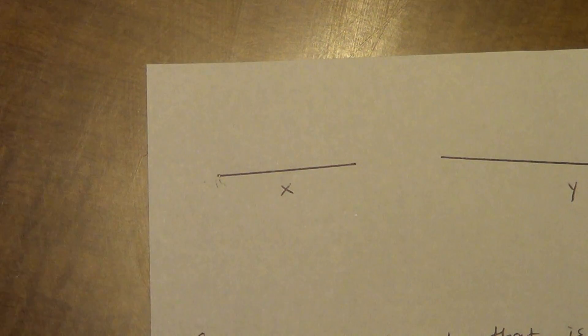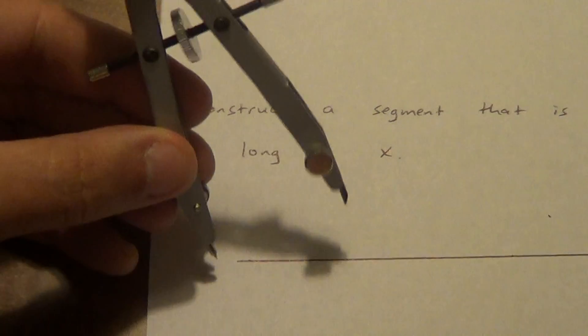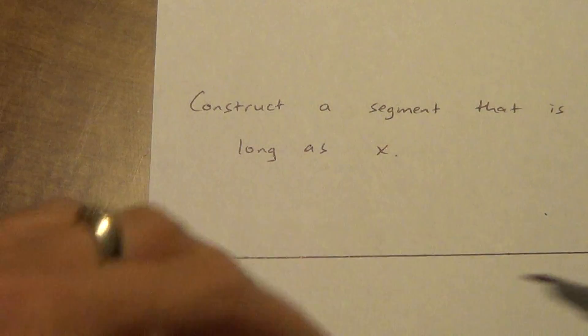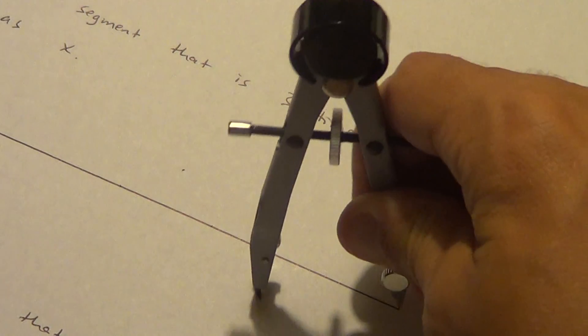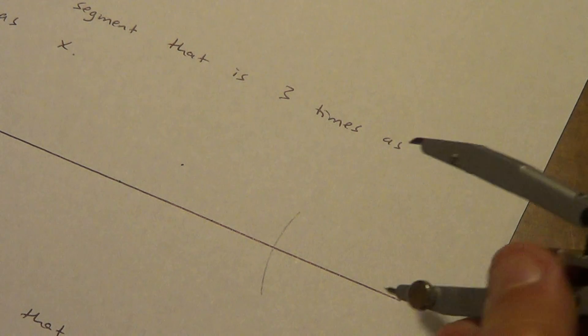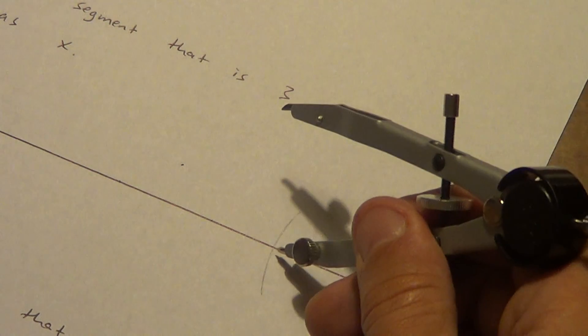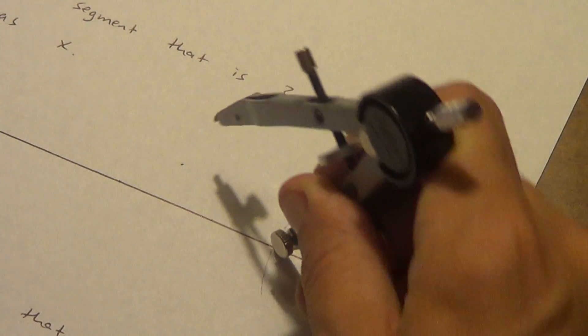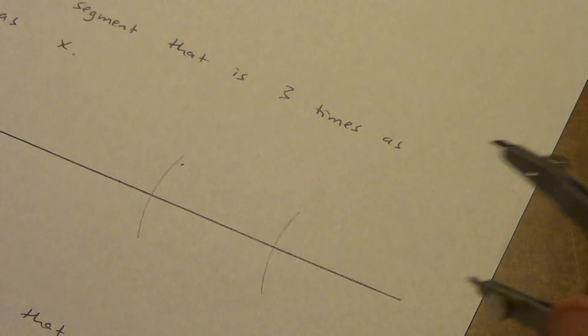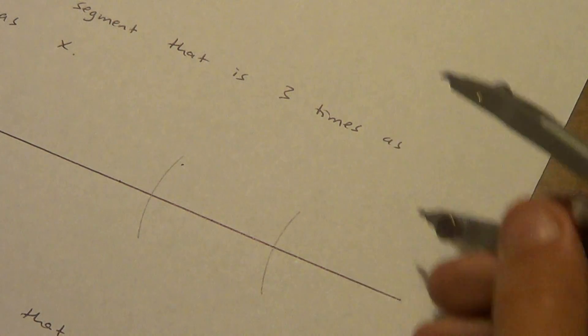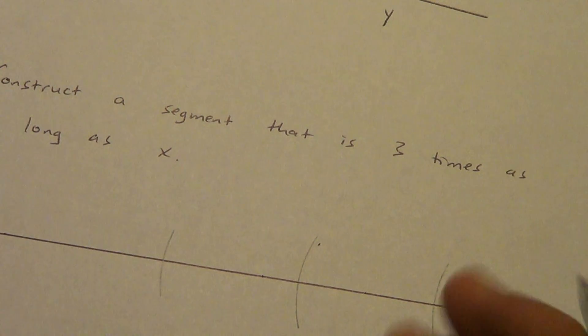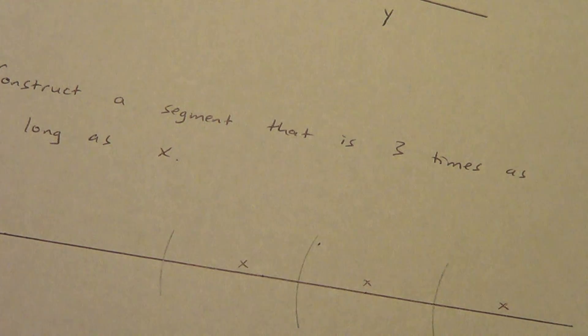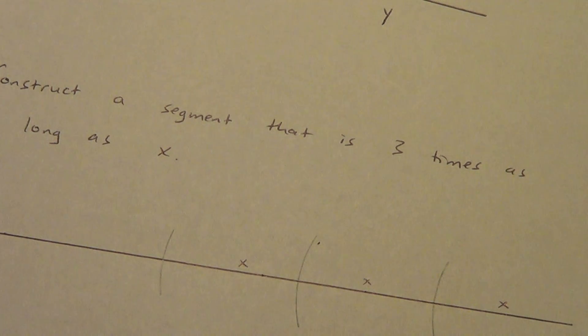Now I want three times as long as X. So basically I want three X's. Just like before, we're going to start at an end point. It doesn't matter, I'll do this end point, it'll just be different than the last time. That is one X. Once again you can just barely see it. Now right where that point of intersection happens, I'm going to start my next one. I'm going to draw another one. That's two X's now. Now another one. That's three X's. Each of those is the exact same distance as that original X.